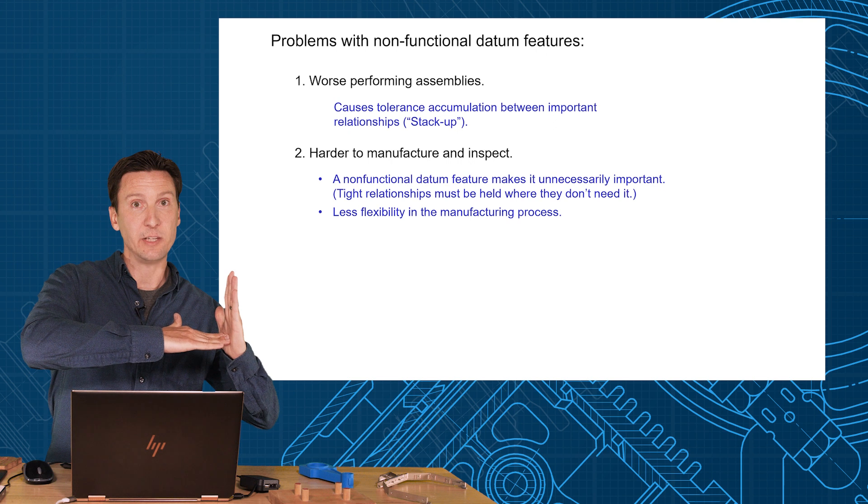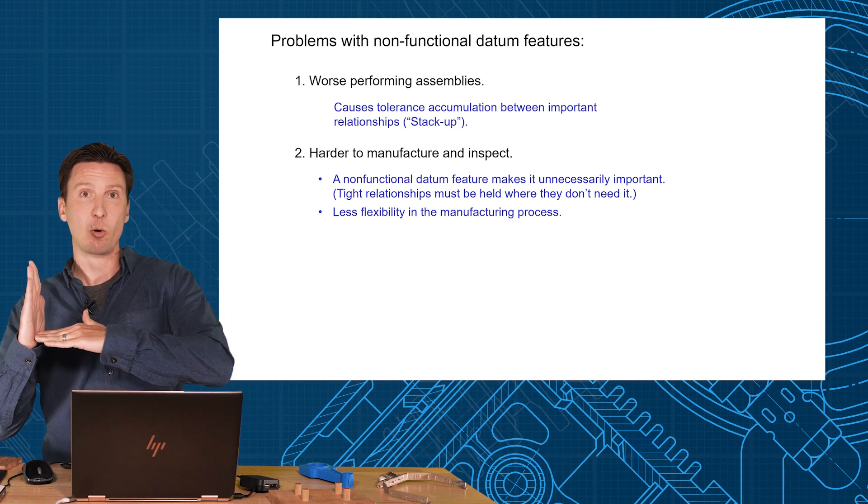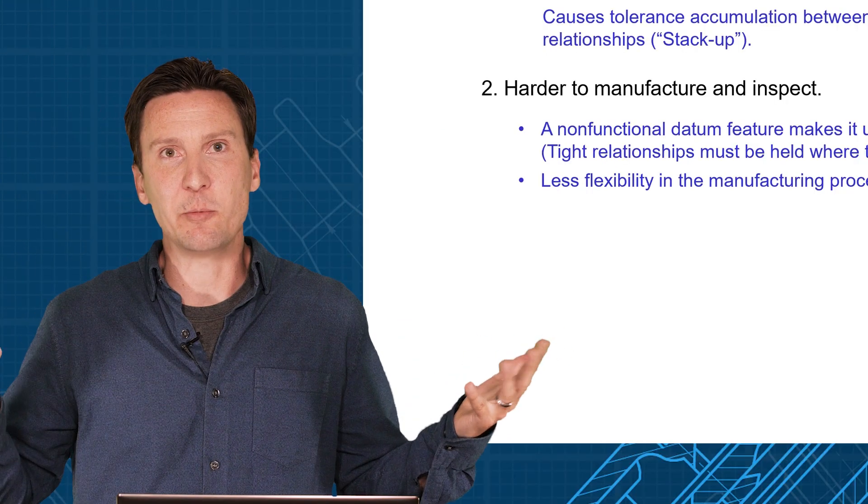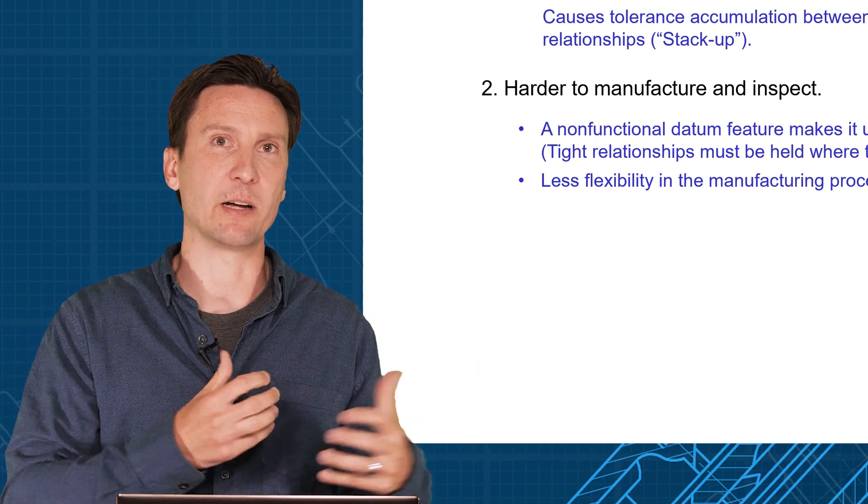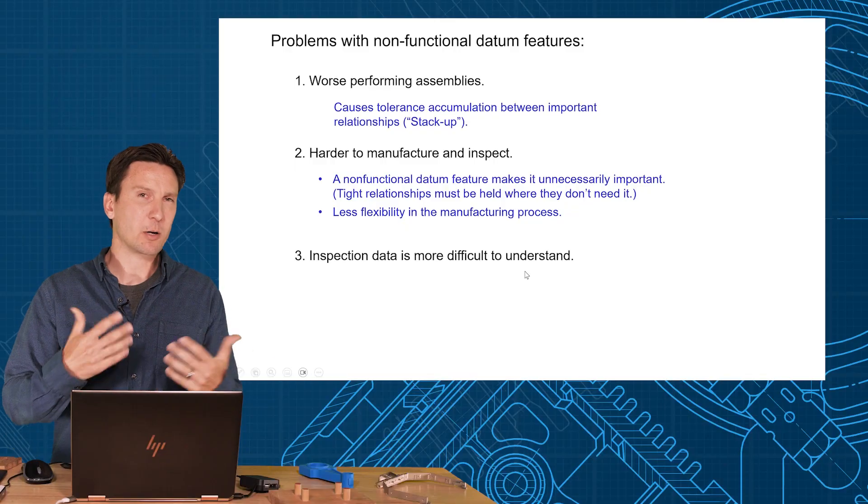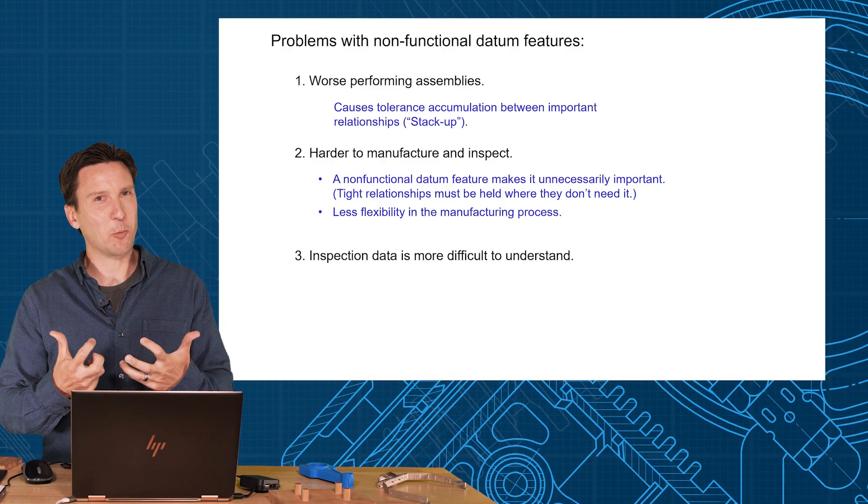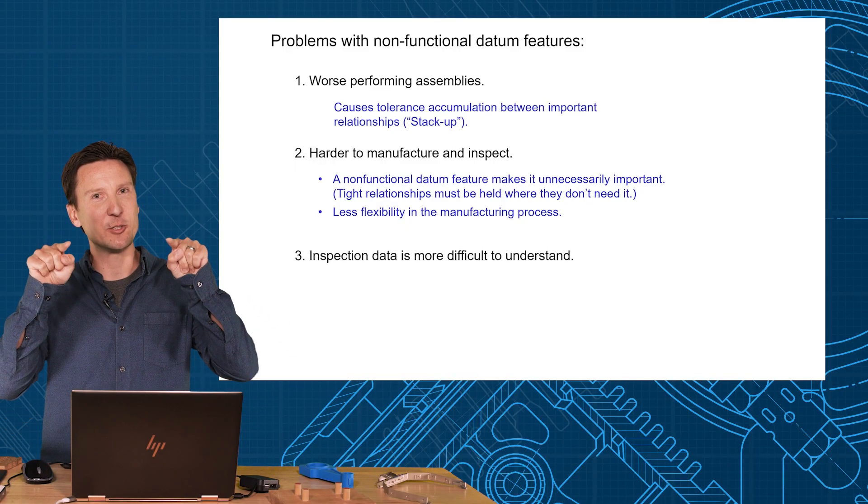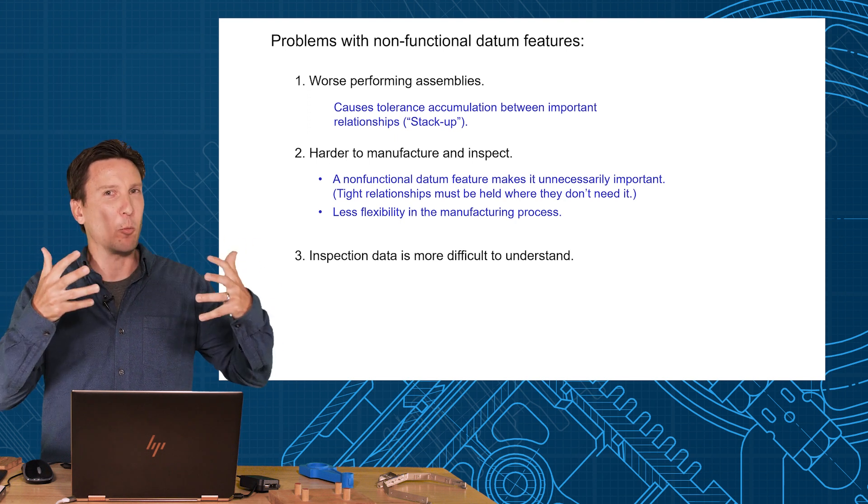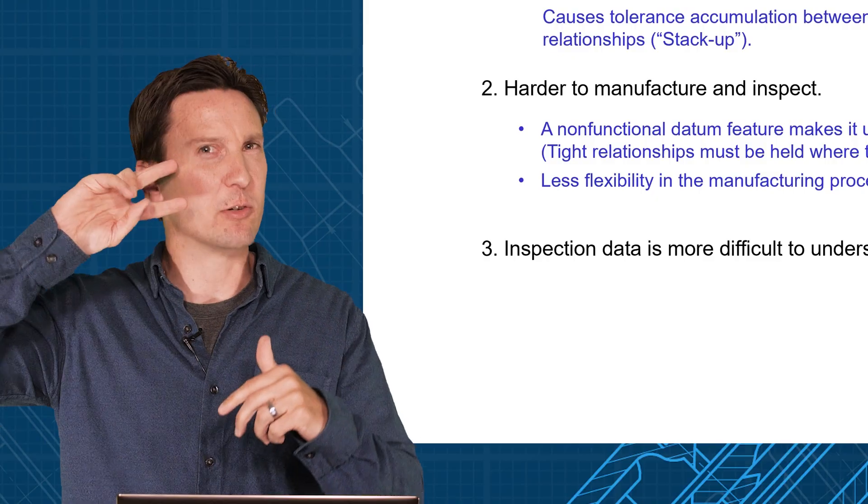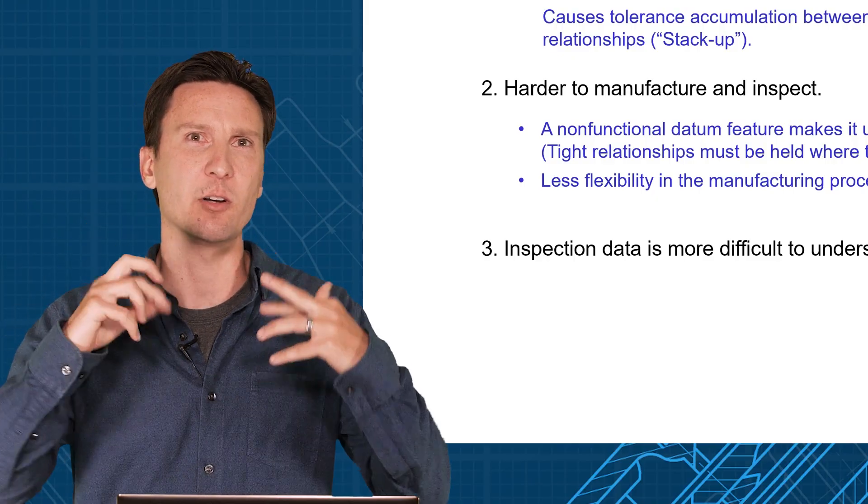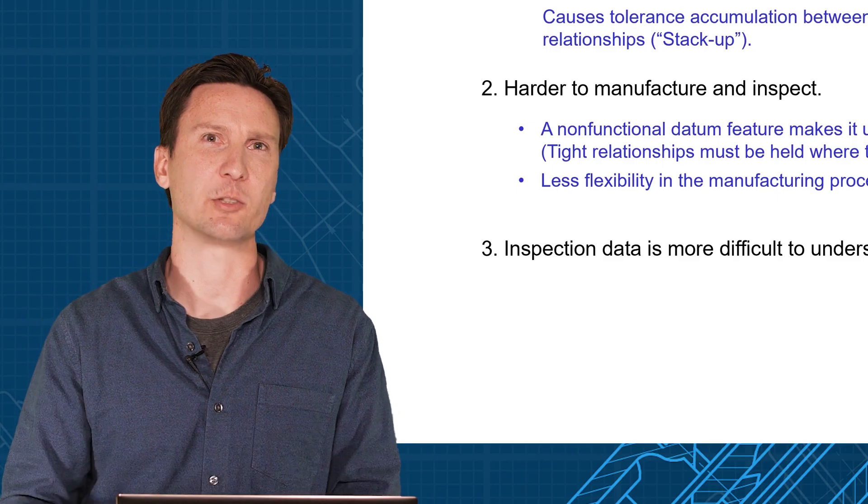Maybe one supplier wants to go off these edges but another supplier wants to go off this edge. Well it doesn't really matter to me as long as you meet my functional need I'd be happy. So don't force the manufacturing process by picking a non-functional datum feature. We talked about inspection data - it doesn't really correlate real well. When somebody says hey those hole and slot are too high, we don't really know how that works because it's really the center of the part's universe and we really want everything related to those instead. So your inspection data can be a little convoluted and harder to understand when you pick those non-functional features.